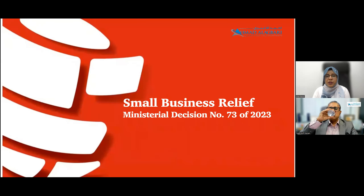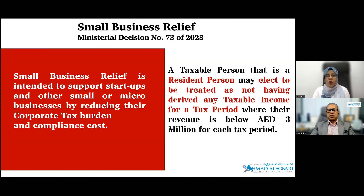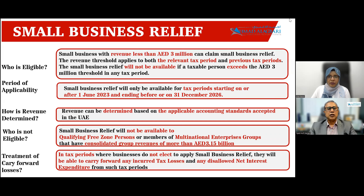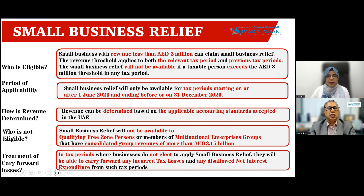There is a small business relief as per Ministerial Decision 73 for small business startups in order to support them. A taxable person who is a resident person can elect to be treated as not having derived any taxable income for a tax period where their revenue is below 3 million AED for each tax period. Small business with revenue less than 3 million AED can claim small business relief. The revenue threshold applies to both the relevant tax period and previous tax periods, and relief will not be available if a taxable person exceeds the 3 million AED threshold in any tax period. Small business relief will only be available for a tax period starting on or after 1st June 2023 and ending before or on 31st December 2026. Revenue can be determined based on the applicable accounting standards accepted in the UAE.